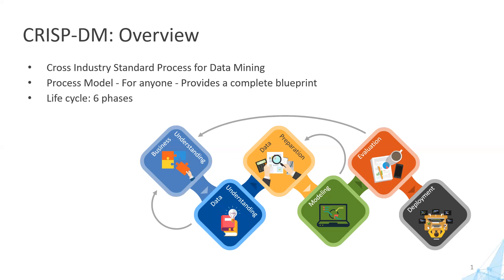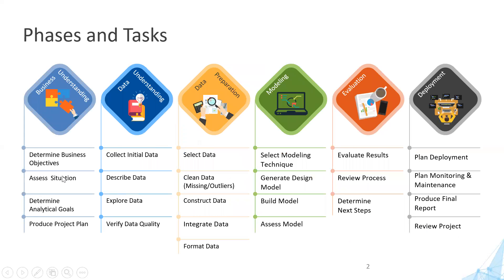Let us look at each of these phases in depth. The first phase is business understanding. As the name itself suggests, in this stage, the data scientist makes an effort to understand the business problem. Each business is very different and the problems that emerge in an area would be very different. Here, we understand the business and formulate the business objectives, which should be very crisp, simple and easy to understand.